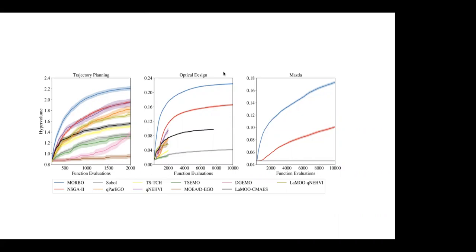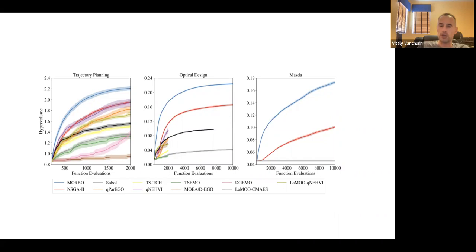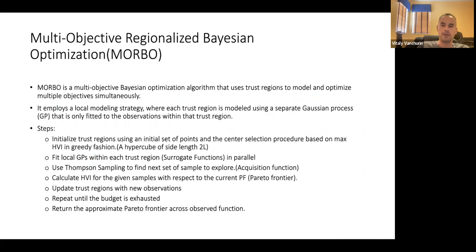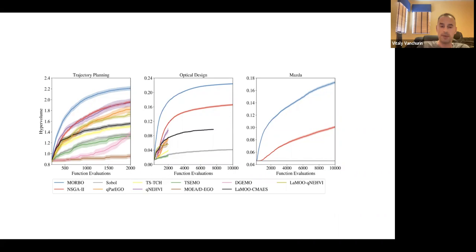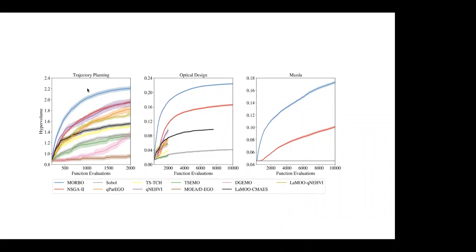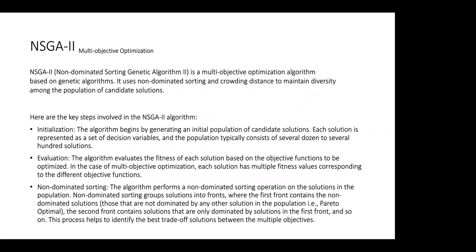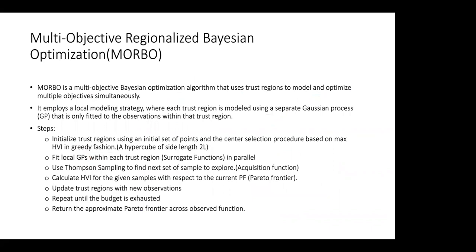At the end they compare different models and show which works better on different problems. But to understand what they concluded, we need to understand the algorithms behind each line, see their differences, and rewrite it in a mathematically coherent way. The paper compares NSGA-2, which was state of the art, and MORBO, which they introduce.